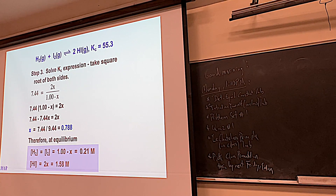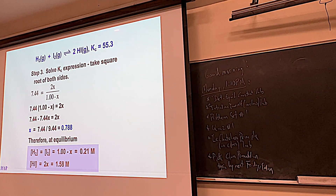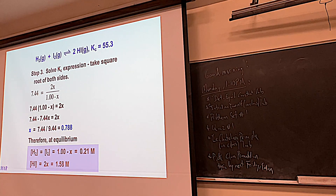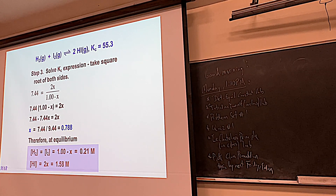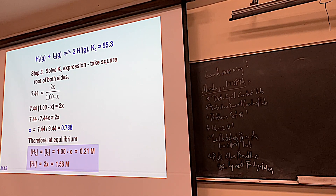You can verify your answers using the value of K. If K is greater than 1, you should have more product than reactant at equilibrium. Here, HI is 1.58 and H2/I2 are each 0.21 — that's consistent. If you really want to verify, plug the values back into K: (1.58)² divided by (0.21)(0.21) should give approximately 55.3.